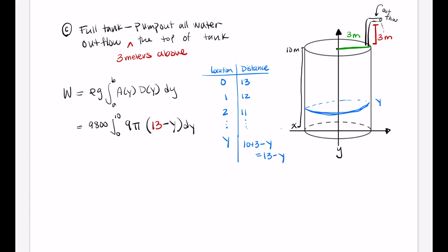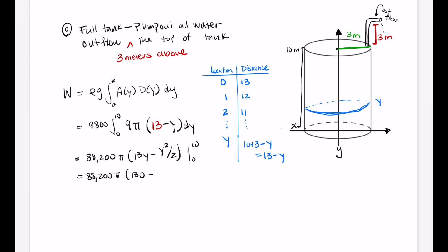With that change, we have 88,200π times the integral from 0 to 10 of (13 minus y) dy. Integrating gives 88,200π times [13y minus y squared over 2] evaluated from 0 to 10. Substituting y equals 10: 130 minus 50, which is 80. So this becomes 88,200 times 80, which equals 7,056,000π joules.